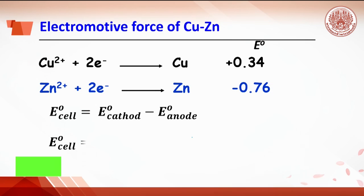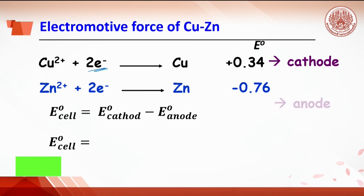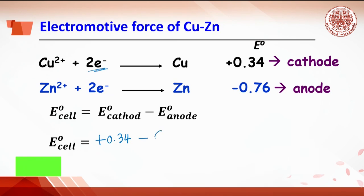For the galvanic cell of copper and zinc: from the reduction potentials, the copper half cell prefers to gain electrons, so it is the cathode terminal, and zinc will be the anode. Replacing the reduction potentials in the equation gives +0.34 minus (−0.76), so the EMF of the copper-zinc cell is 1.1 volts.